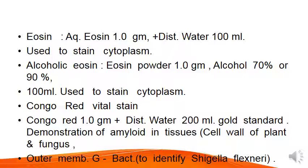Next is Alcoholic Eosine: eosine powder 1 gram, alcohol 70% or 90%, 100 ml, used to stain cytoplasm. Congo Red vital stain: Congo Red 1 gram, distilled water 200 ml. Used for demonstration of amyloid tissues, cell wall of plants and fungus, outer membrane of gram-negative bacteria — for example, to identify bacteria like Shigella.